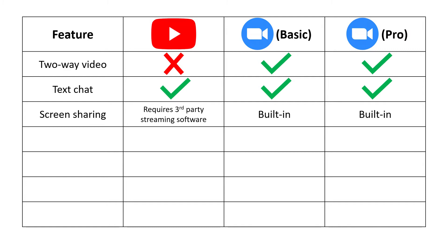So it might look like this is stacked pretty heavily in favor of Zoom up until this point. But I think the advantages for YouTube start to come in when you look at the price and some of the limitations built into the Zoom accounts. YouTube is free and so is the basic Zoom account, whereas as of November 2020, a pro Zoom account is $149 a year — a little over $10 a month — which doesn't seem that bad.